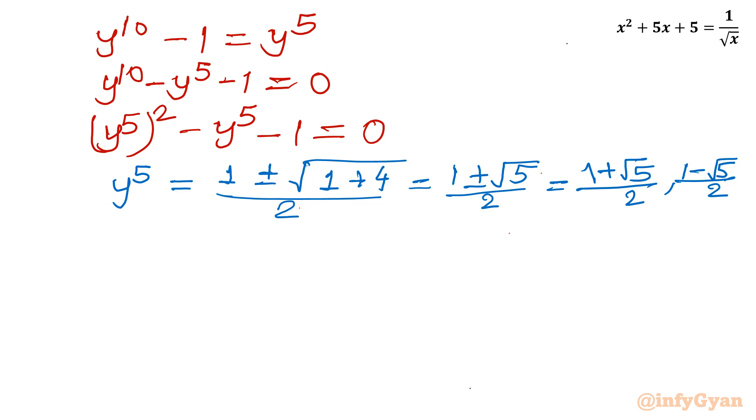Now you can see left hand side is having power 5. So let me write y value. So y value I can write ((1 + √5)/2)^(1/5). And second value I can write ((1 - √5)/2)^(1/5). After taking fifth root both sides. So this is our ultimate y value.